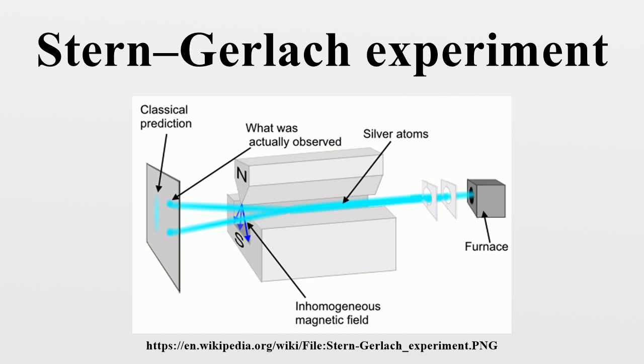History. The Stern-Gerlach experiment was performed in Frankfurt, Germany in 1922 by Otto Stern and Walther Gerlach. At the time, Stern was an assistant to Max Born at the University of Frankfurt's Institute for Theoretical Physics, and Gerlach was an assistant at the same university's Institute for Experimental Physics.